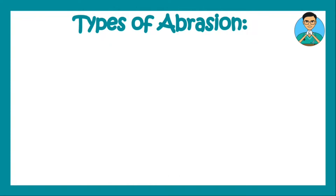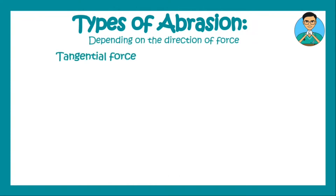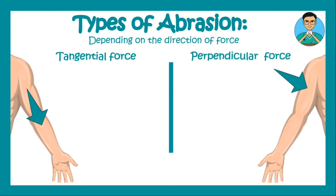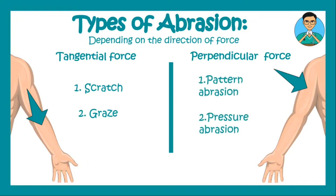Abrasions can be of different types based on the direction of application of force. The force can be a tangential force that is along the body surface, or it can be a perpendicular force that is 90 degrees to the body surface. Based on tangential force, abrasions can be scratches or grazes. And if the force is perpendicular, we can get a patterned abrasion or a pressure abrasion.